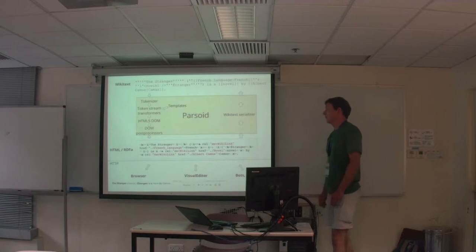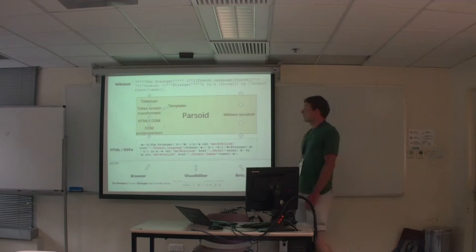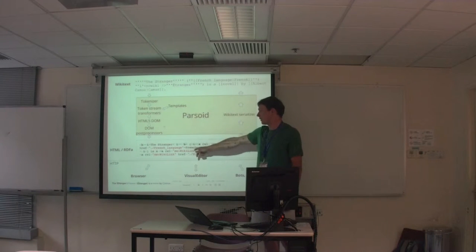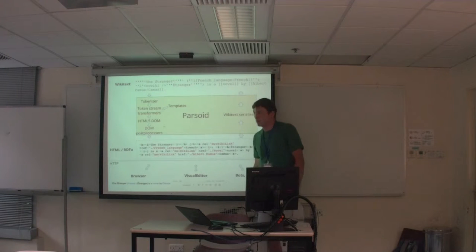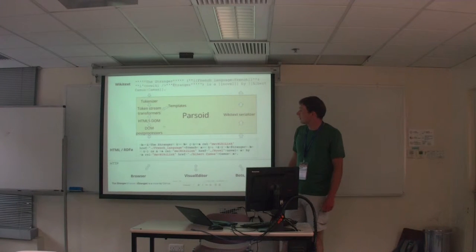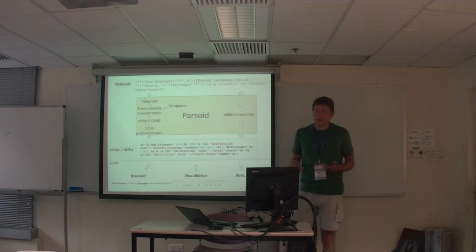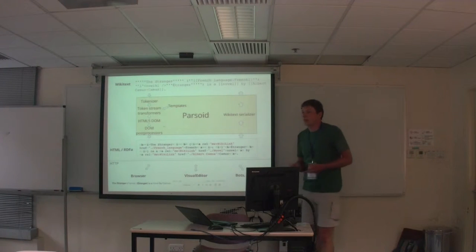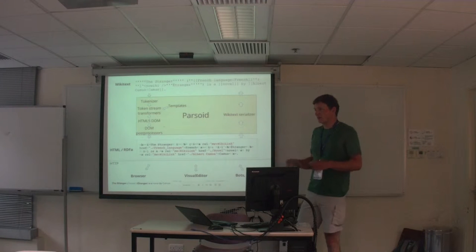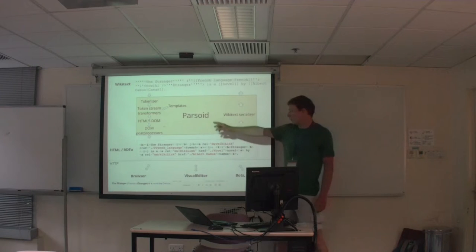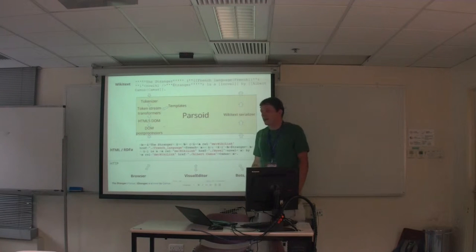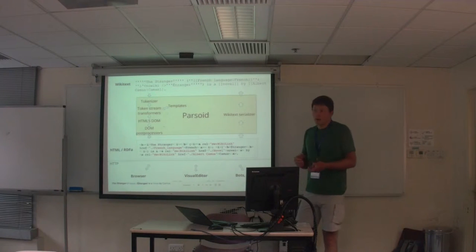Here's how Parsoid looks architecturally. We start with wiki-text and pass it to a tokenizer based on a PEG grammar. The PEG grammar builds a tree internally but we flatten it to tokens, giving us a token stream. Initially that's a mix of HTML-like tokens — start tag, end tag, text — and some custom ones like bullets for wiki-text lists or quotes for italic/bold. Token stream transformers then look at these non-HTML tokens and transform them in an asynchronous manner until all tokens are eventually HTML tokens.